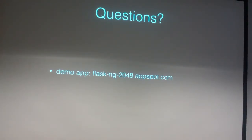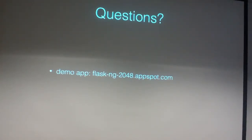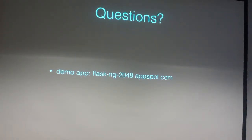GitFlow has verbs like start and finish for features, hotfixes, and releases. You still make commits explicitly as you work normally. But when you're ready to do housekeeping work, like merging a finished feature branch into develop, you just tell it 'GitFlow feature finish, name of feature' and it does the merging and automatically generates a commit message. If there are conflicts you still have to fix them yourself, but it speeds up that part of the process.